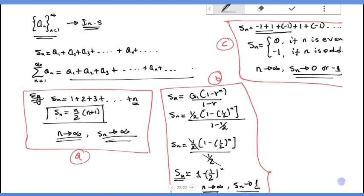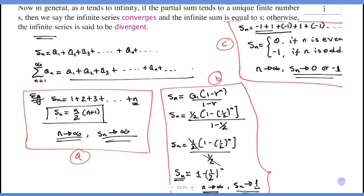In general, as n tends to infinity, if the partial sum tends to a unique finite number S, then we say the infinite series converges and the infinite sum is equal to S. Otherwise, the infinite series is said to be divergent.